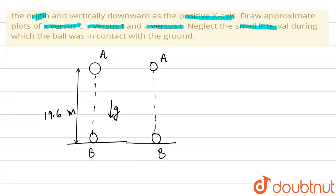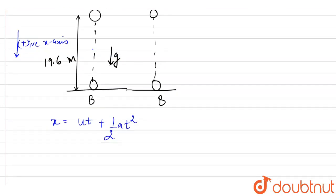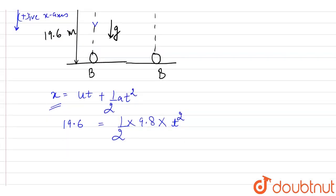Our convention here is that the downward direction is the positive x-axis. We can use equations of uniformly accelerated motion: x equals ut plus half at squared. Taking the path from A to B, the initial velocity of the ball is 0 and the displacement covered is 19.6 meters. Using acceleration of 9.8 meters per second squared, the time comes out to be 2 seconds.